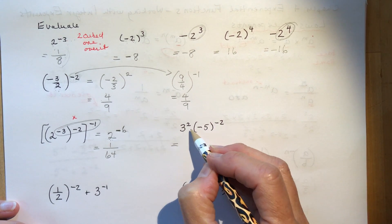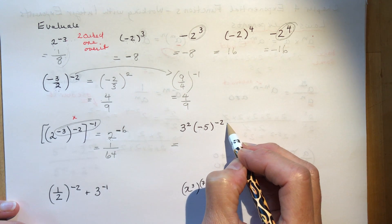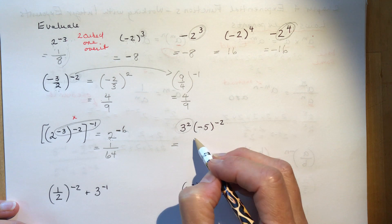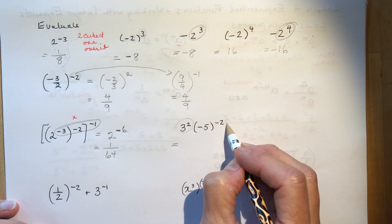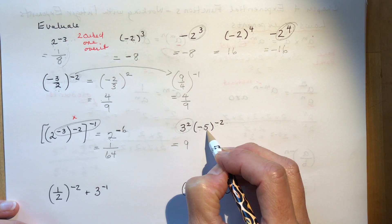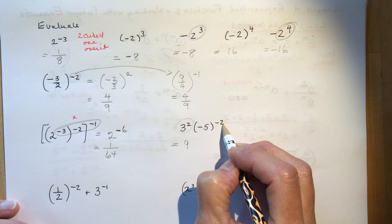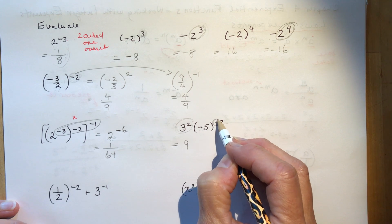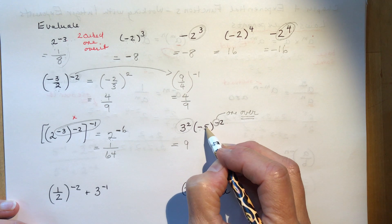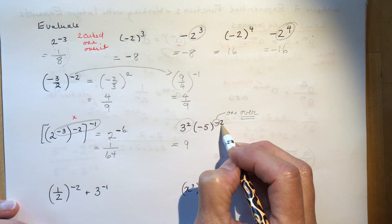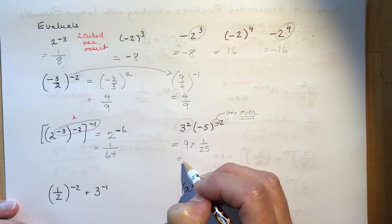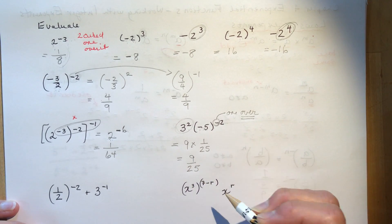Three squared times minus five to the minus two: three squared is nine. Minus five squared is 25, and one over it because of the negative exponent gives one over 25. Multiplying nine by one over 25 gives nine over 25. Easy.